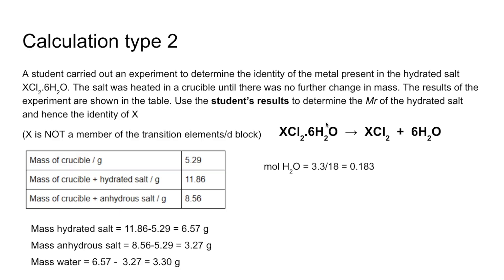Now we know the moles of that, we can work out the MR of the XCl₂·6H₂O. Mass over MR, so 6.57 over the moles. So we get an MR for the hydrated salt at 215.4 grams per mole. So that's the first part of the question answered.